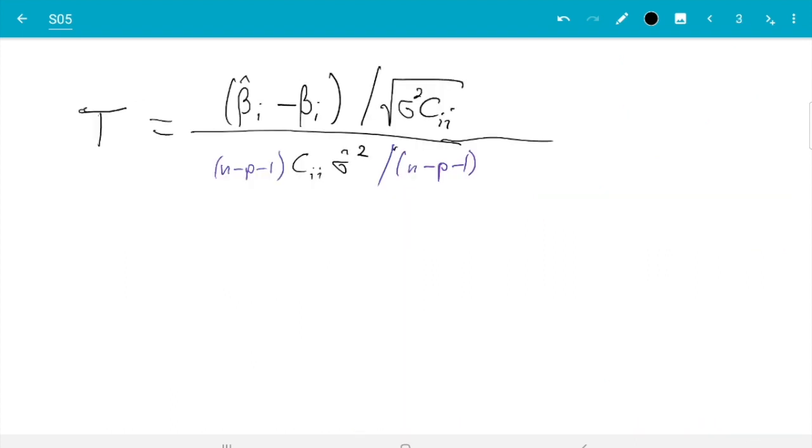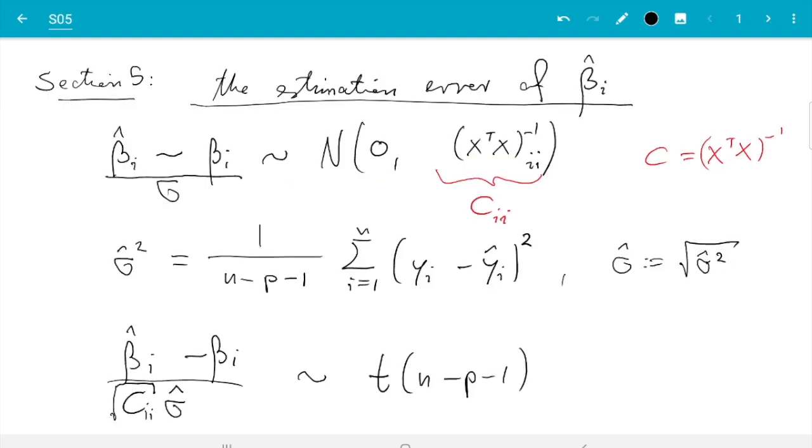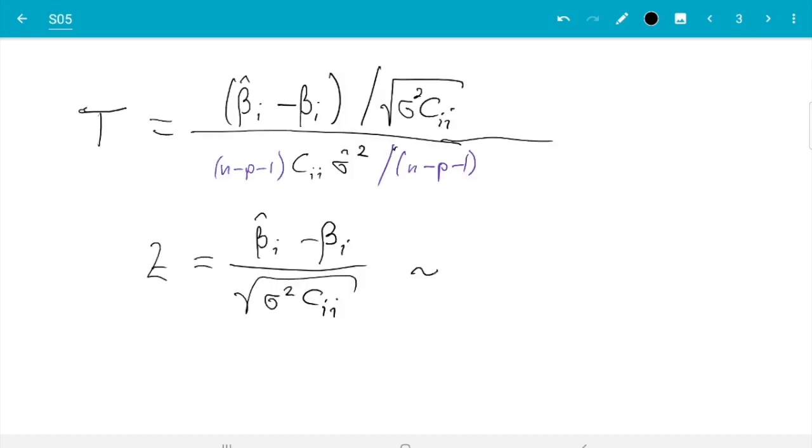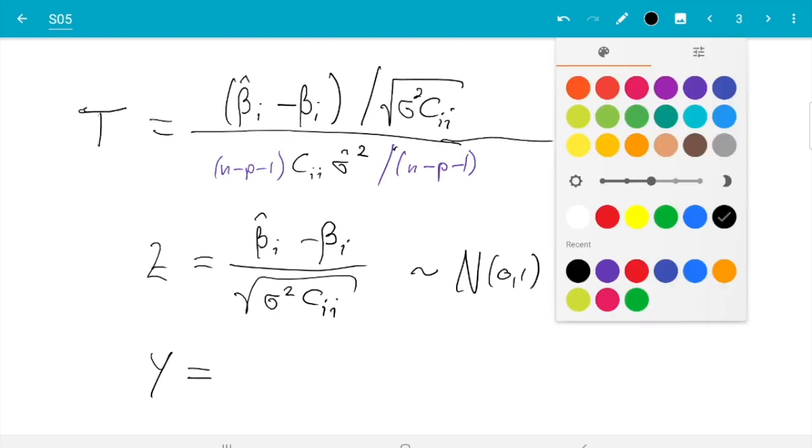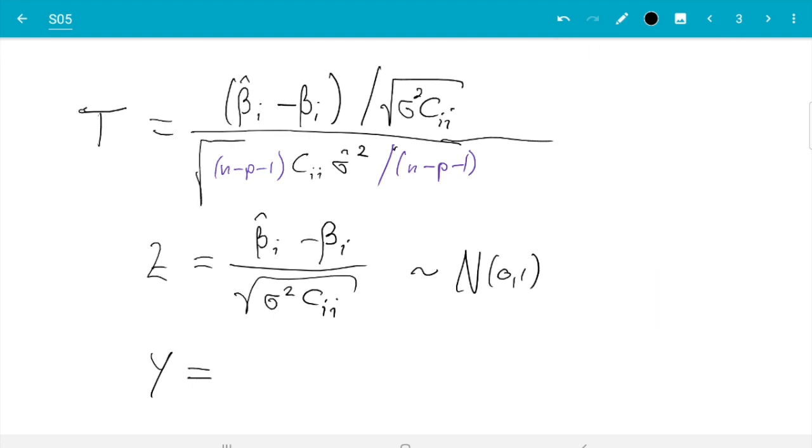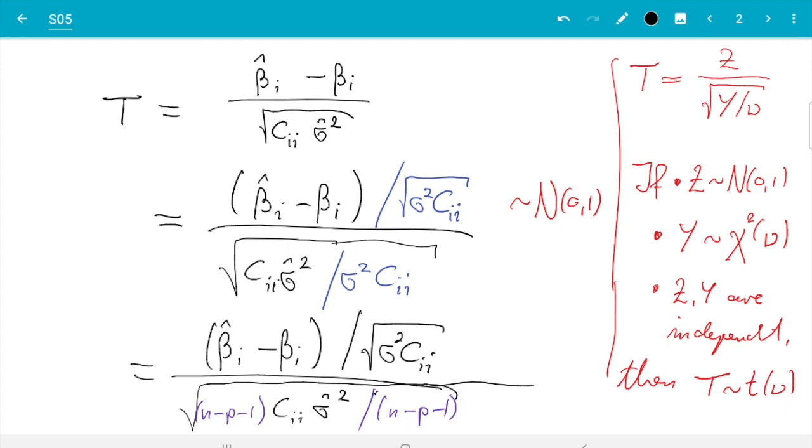If we can show the distributions are right. So Z is beta hat i minus beta i divided by square root sigma squared Cii. And we saw that here the sigma is already there. That is the right thing to divide by. So before it was normally distributed with the wrong variance. We have divided by the standard deviation, so that's standard normal distributed. And then Y if it's going to work. Well first I forgot the square root here. Here it's still there.